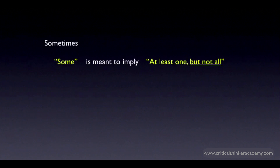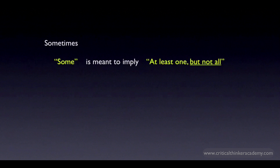Here's something to be aware of. The standard reading of 'at least one A is B' is consistent with it being true that all A are B. So if I say 'some dogs have long hair,' this doesn't rule out the possibility that all dogs, in fact, have long hair.